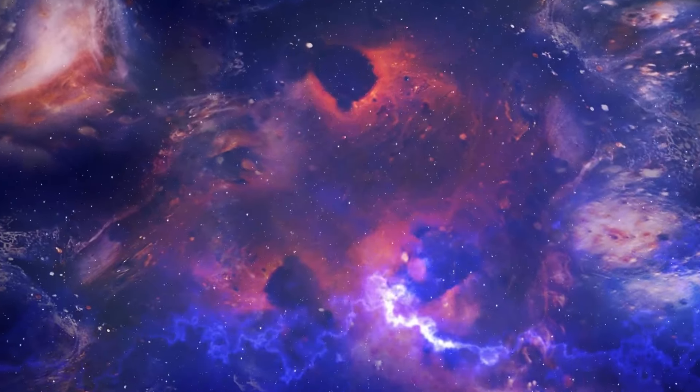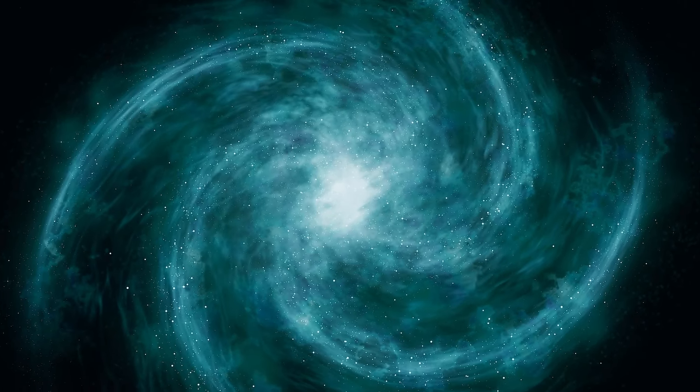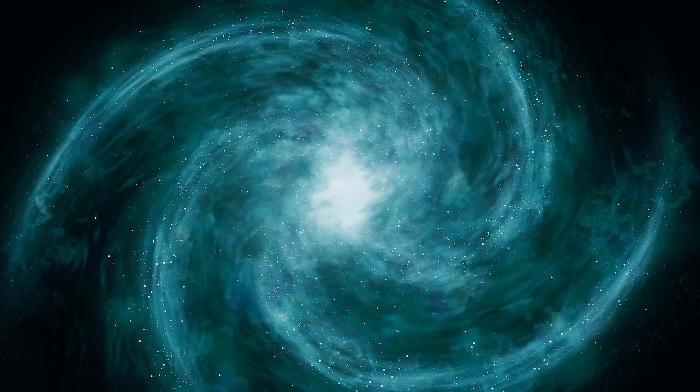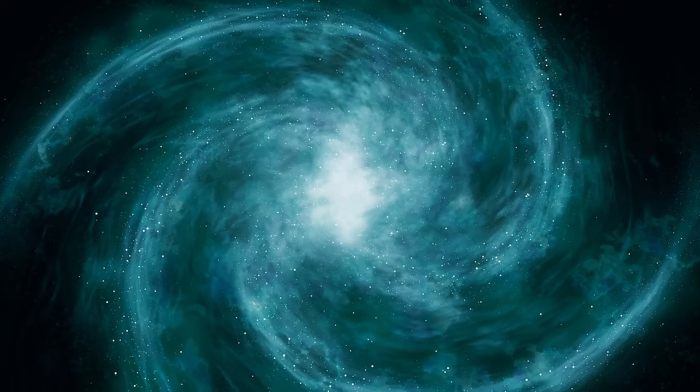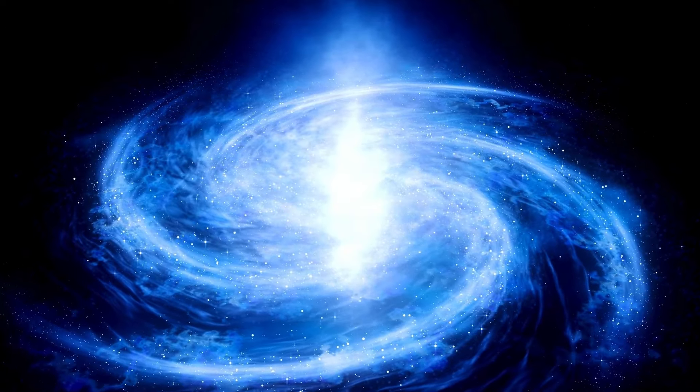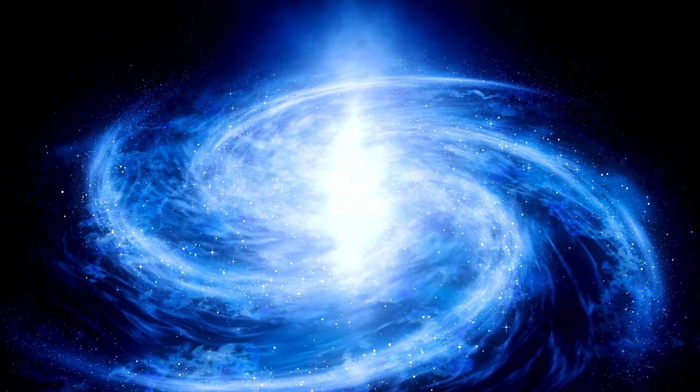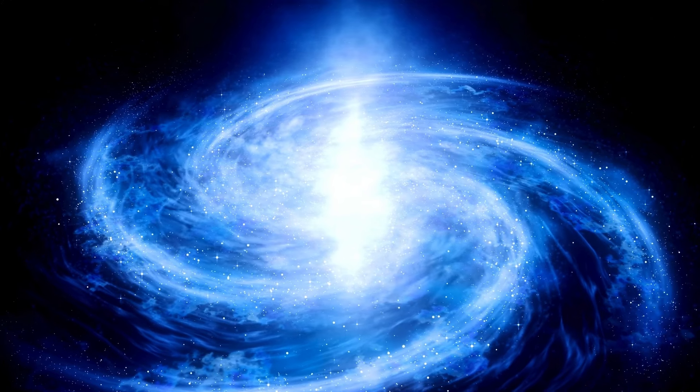Next in line were the Population 2 stars, forming a bit later but still cosmic curveballs in the universe's early days. Their original materials were light on heavy elements, especially iron. Many of them danced through their stellar life cycles, bursting into supernovas and adding more heavy elements to the universal mix.